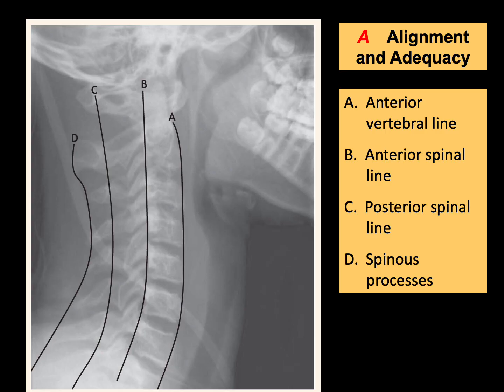The first thing we have to start with is always check the patient identification with the films you are going to interpret, especially with the era of PACS systems that allow you to have a look at a lot of films that might be for another patient or for the same patient at different times. The first thing is to be sure of the patient identification, as this is a patient safety issue.